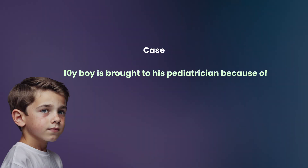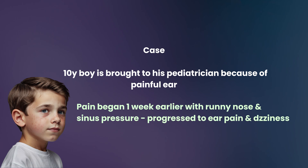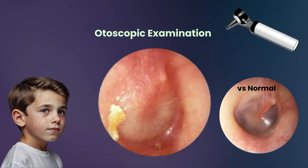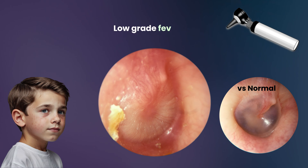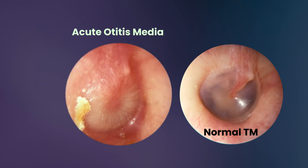A 10-year-old boy is brought to his pediatrician because of a painful ear. The pain began one week earlier with a runny nose and sinus pressure that progressed to ear pain and dizziness. Otoscopic examination reveals the findings in the picture below. He has a low-grade fever of 37.8 degrees Celsius, but no other physical findings. The most likely diagnosis is acute otitis media.